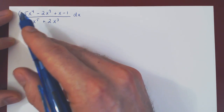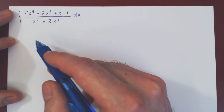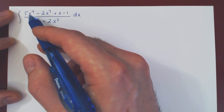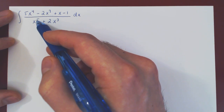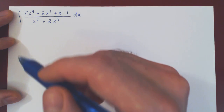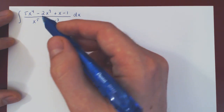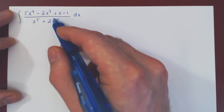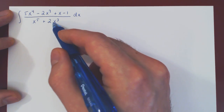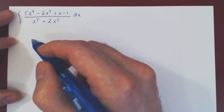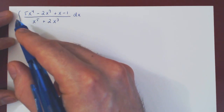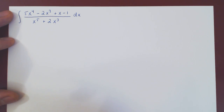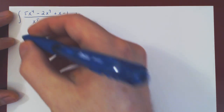In this video we will integrate the following rational function using the method of partial fractions. As the degree of our numerator is strictly smaller than the degree of our denominator, we do not have to perform long division, and so we can jump straight ahead to factoring our denominator completely. Both terms have a factor of x cubed, so this will be a very simple factorization. Let's now ignore the integral and consider the rational function which we are going to decompose as a sum of partial fractions.